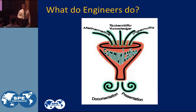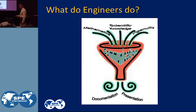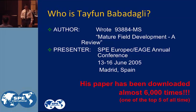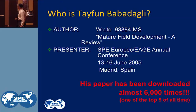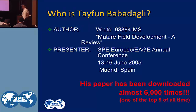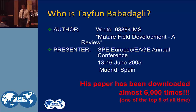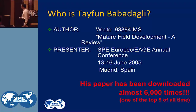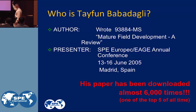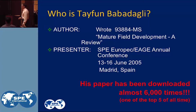What comes out the other end is documentation for your company on that process, and probably a presentation to your peers or management. Speaking of writing papers for SPE — who is Typhoon Babladogli? He wrote a paper in 2005 presented at a conference in Madrid, Spain on mature field development — a review. Since 2005, that paper was downloaded six thousand times. It's one of the top five of all time for SPE.